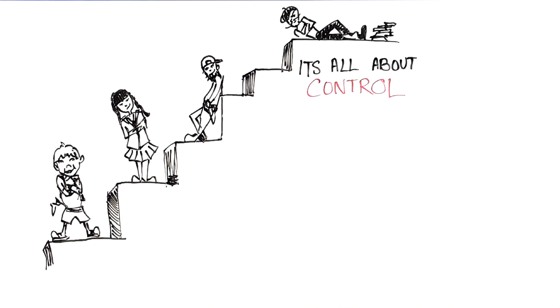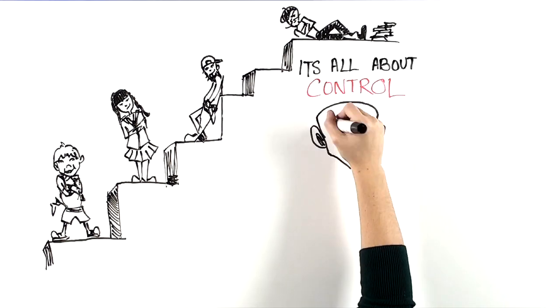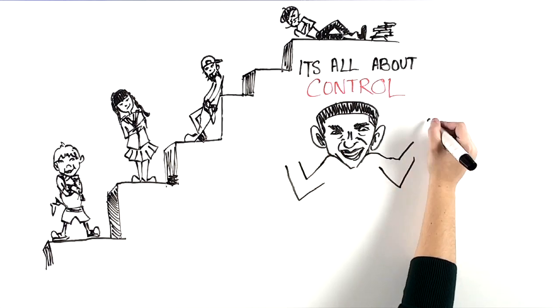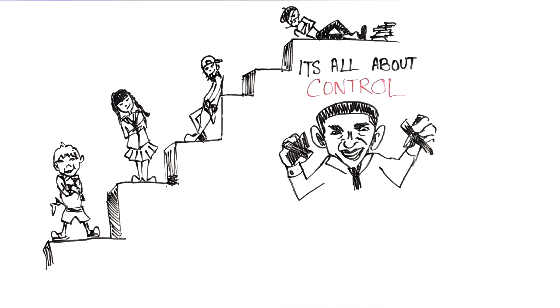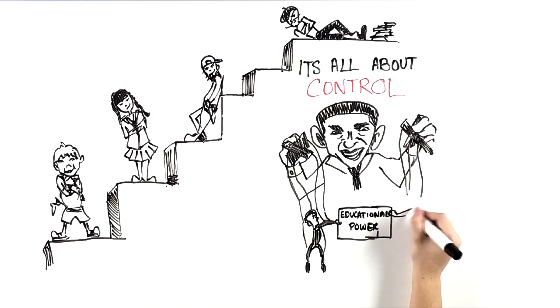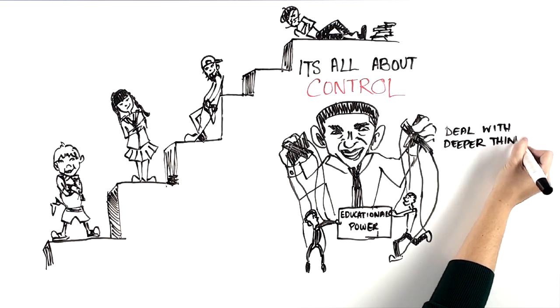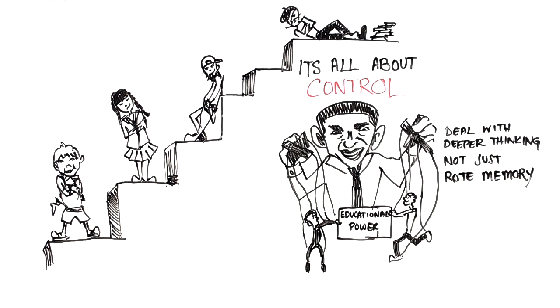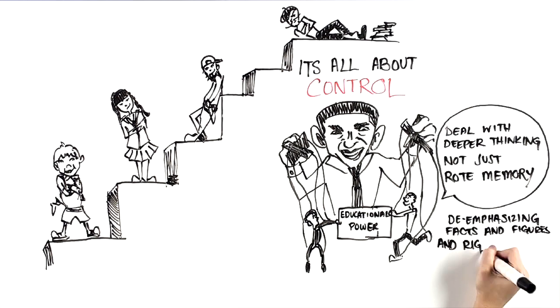It's all about control in the end. By nationalizing education, Obama's master plan hands over educational power to enormous special interest groups like the American Federation of Teachers, who bragged that they were involved in writing the education standards. They said they wanted national tests to deal with deeper thinking, not just rote memory, which is code for de-emphasizing facts and figures and right and wrong answers.